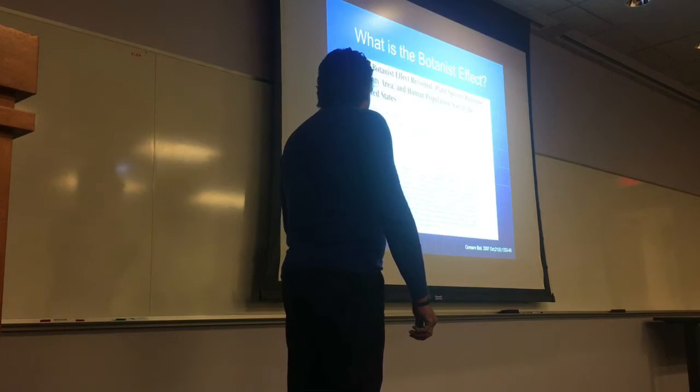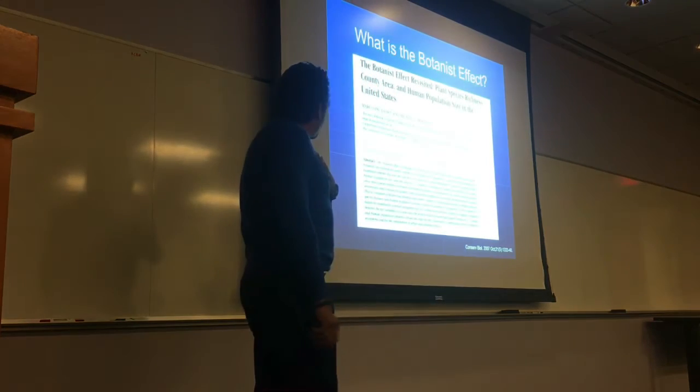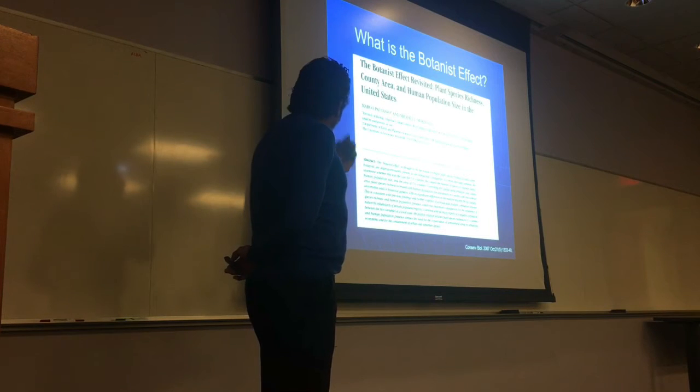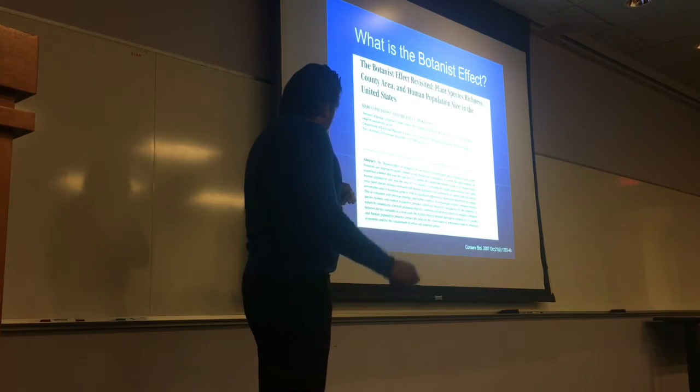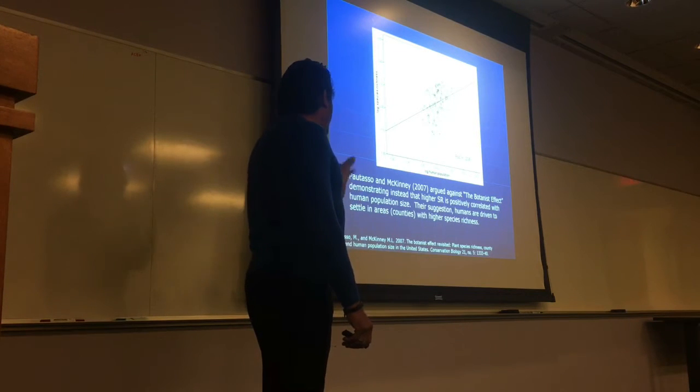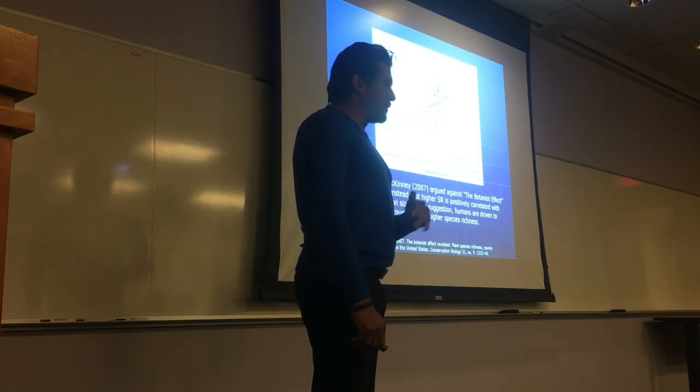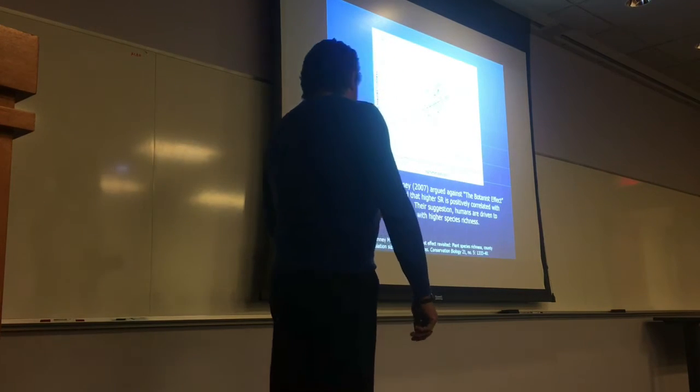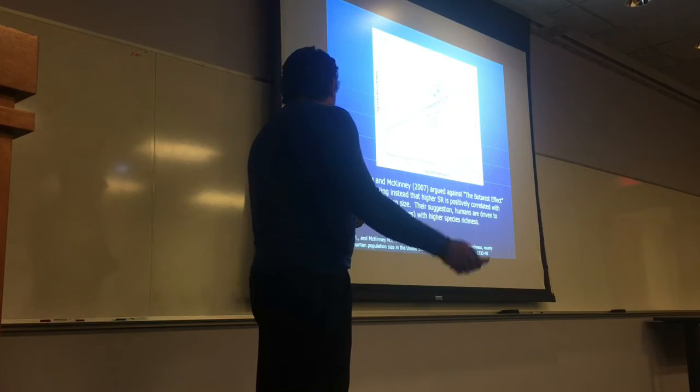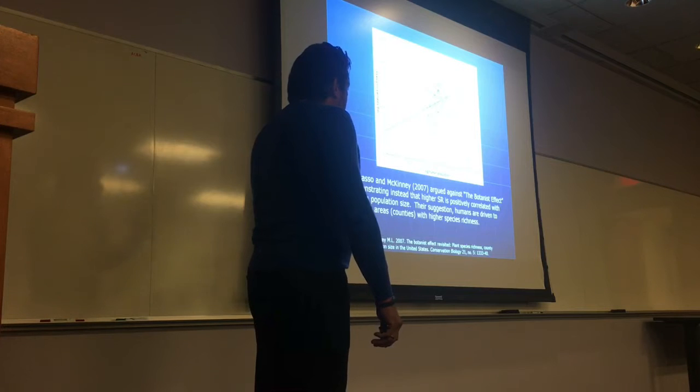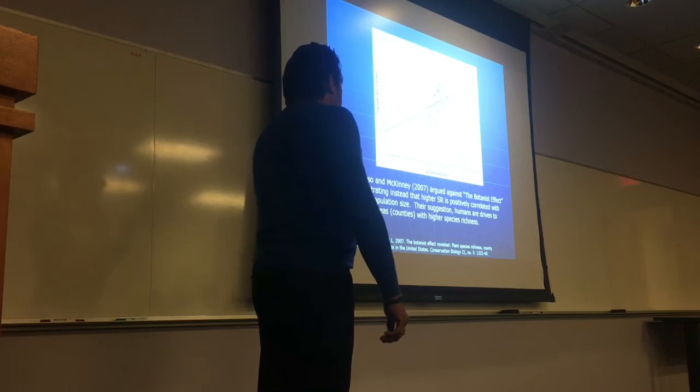As soon as this paper was written, maybe about six months later, there was a rebuttal to this argument here. This is the botanist effect revisited, plant species richness, county area, and human population size in the United States. And in this paper, Fattorso and McKinney argue something rather different. They argue against the botanist effect, instead demonstrating that higher species richness is positively correlated with human population size. Their suggestion: humans are driven to settle in areas with higher species richness. And we understand this because humans tend to settle in ecotones, right? You get the best of both worlds, surf and turf. Most people settle along the coast. One day I have lobster, tomorrow I can eat a steak. So, again, we do see that humans are driven to areas with a higher species richness.